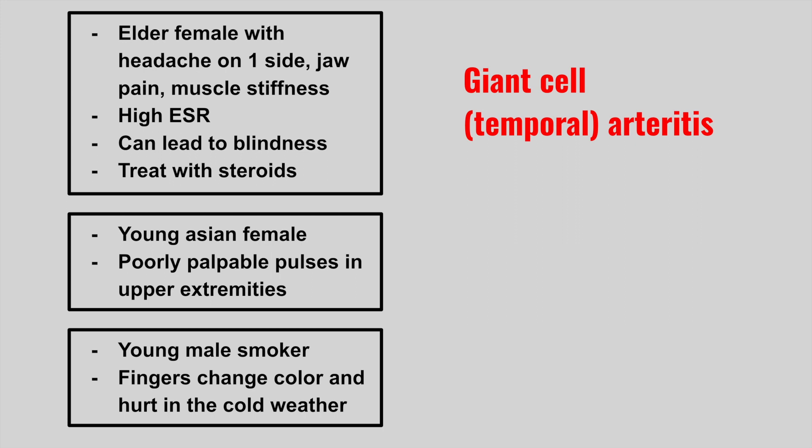Next, we have a young Asian female with poorly palpable pulses in the upper extremities. So this is Takayasu arteritis. Remember, the first two conditions are both examples of large vessel vasculitis, and they can both have granulomatous inflammation on histology.